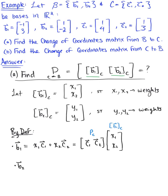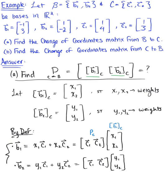We do the same for vector B₂: it equals y₁ times vector C₁ plus y₂ times vector C₂. Converting to matrix form, we have the matrix with column vectors C₁ and C₂ — the change of coordinates matrix relative to basis C — multiplied by the coordinates of vector B₂ relative to basis C. We now need to solve both of these equations.